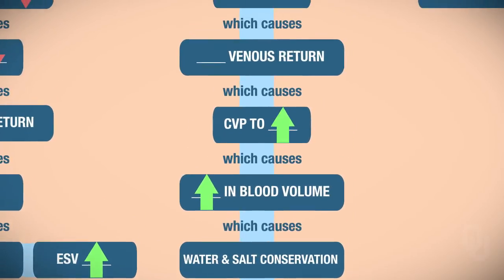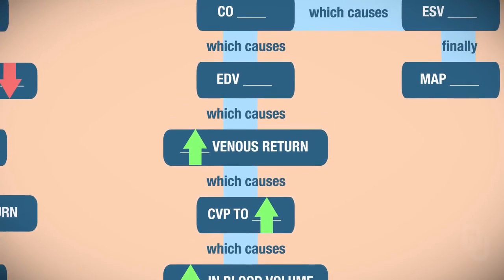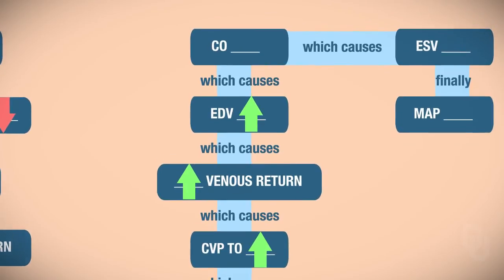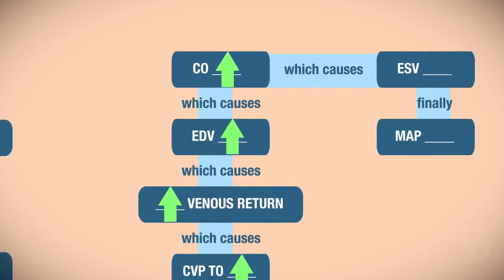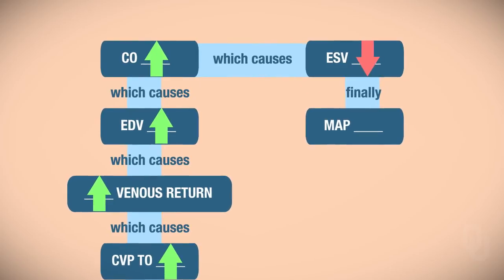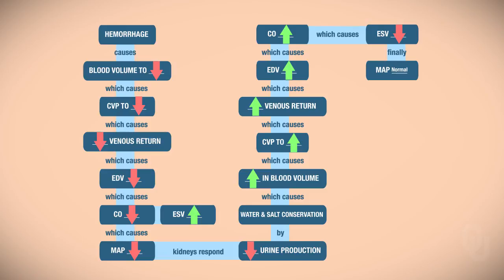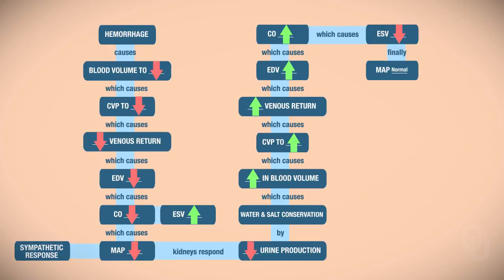Conserving salt and water will increase blood volume. If blood volume increases, central venous pressure increases. Higher pressure means more blood returning to the heart, so venous return goes up. The more blood entering the heart, the larger the end diastolic volume, which causes cardiac output to go up. If cardiac output goes up, there's a larger ejection, so end systolic volume goes down. Finally, if cardiac output goes up, MAP is returned to normal. MAP had fallen drastically due to hemorrhage, and now it is elevated, so the system shuts off via negative feedback. You could also add the sympathetic response to this flowchart as well.